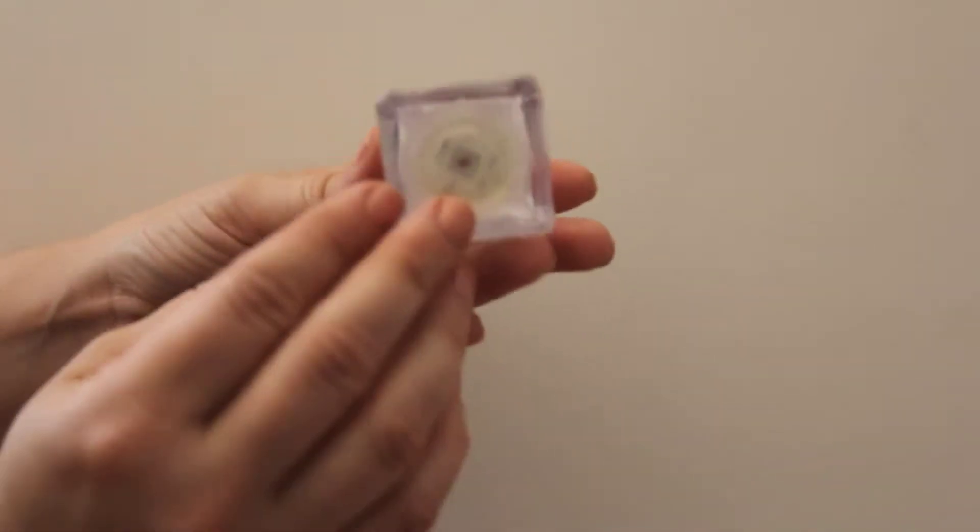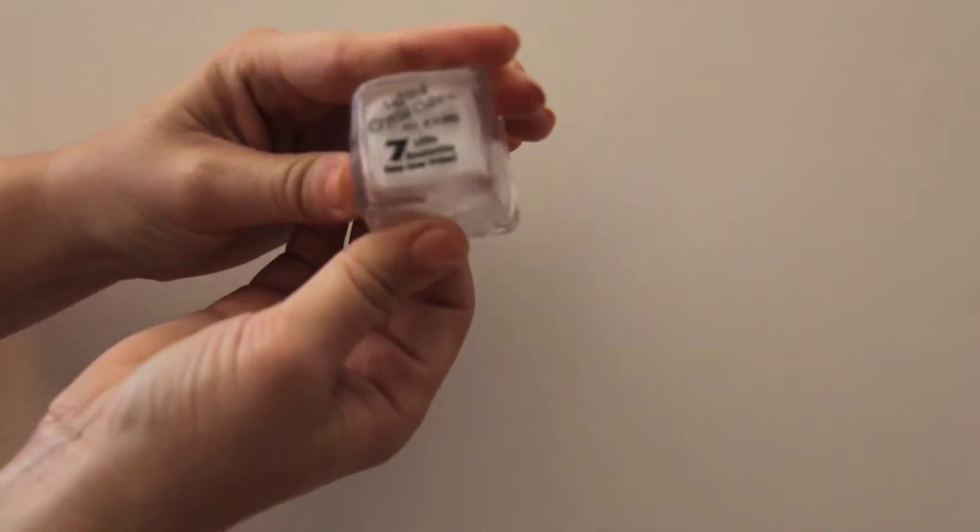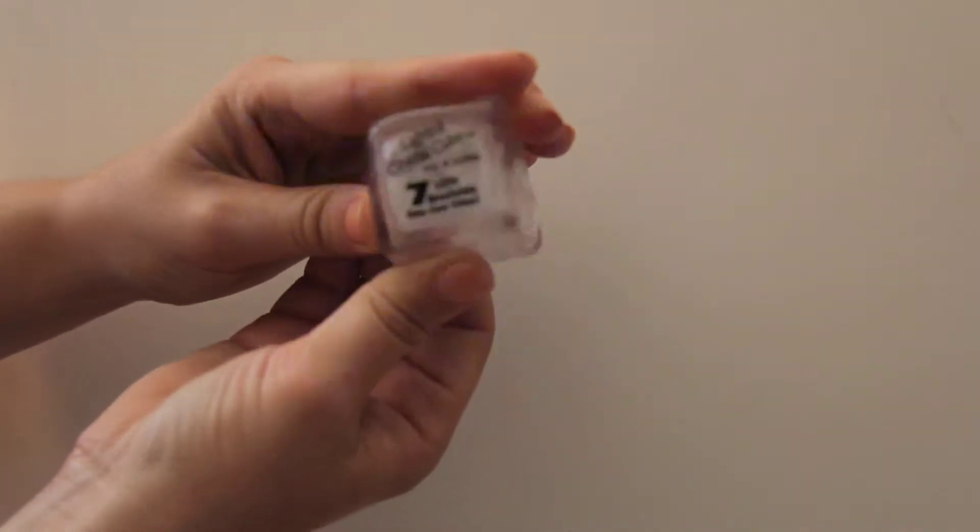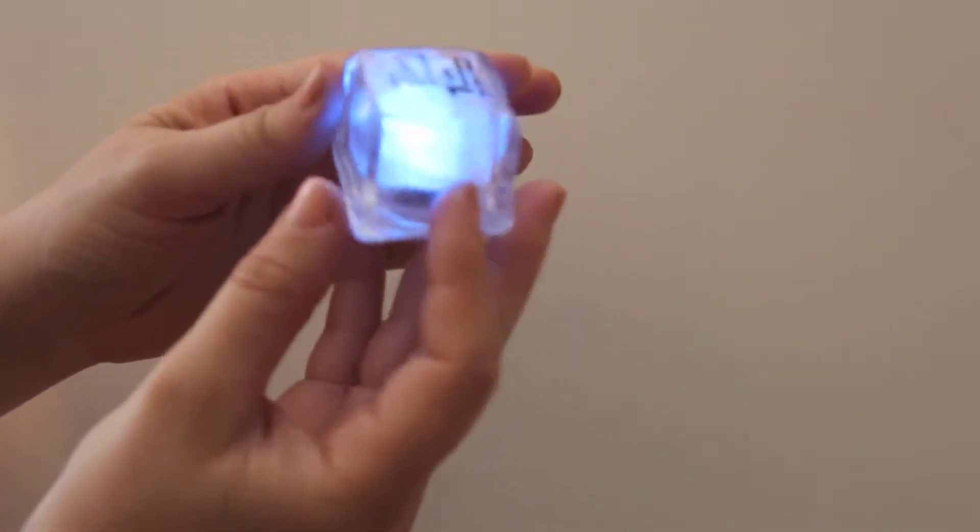The next item we have is the Light Up Cube. This item is ideal for making an impact at events. There are three settings: off, blinking, and solid light. Different LED colors are also available upon request.